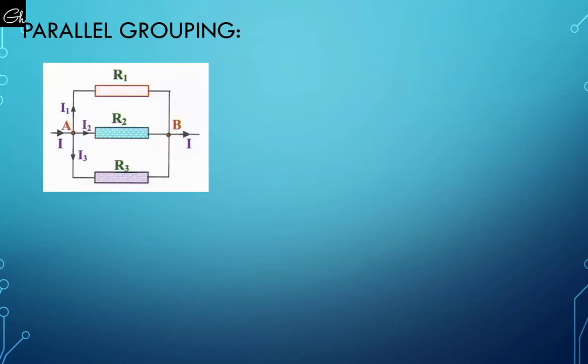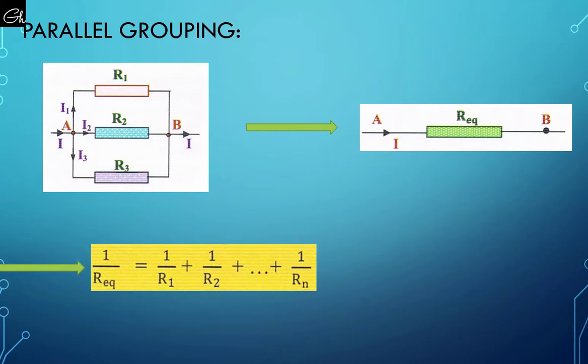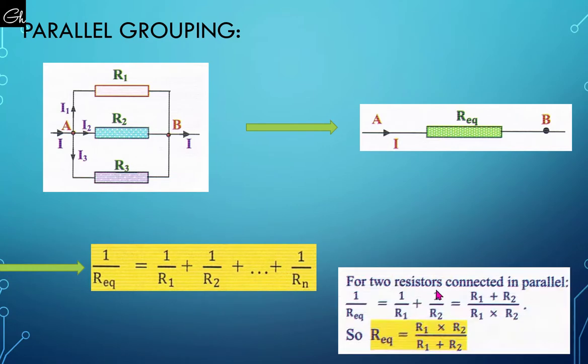In parallel grouping, to find the equivalent resistance of these resistors we can use this formula. For a special case of two resistors only, we can use this formula.